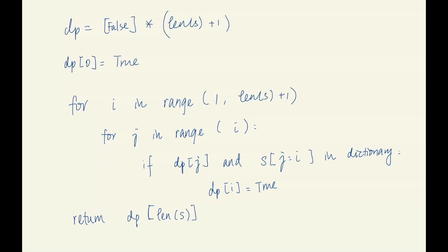At the very end of the solution, we return the very last element in our dp array. That position represents whether from index 0 to the end of our string, the whole string can be segmented into dictionary words. As you can see, dynamic programming is actually not that hard to write. It might take some time to think through the solution and figure out the ranges for i and j, but once you have your pseudocode written down, it's very simple to implement.